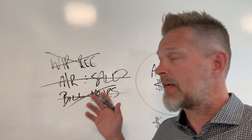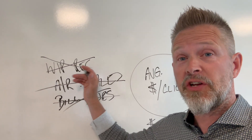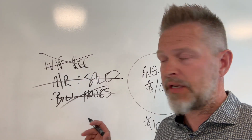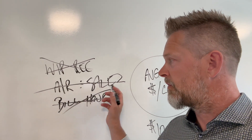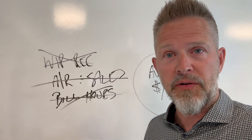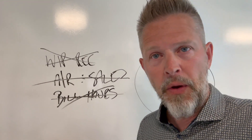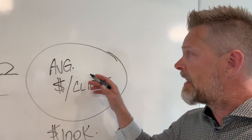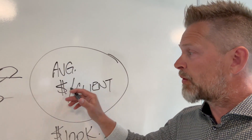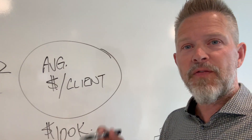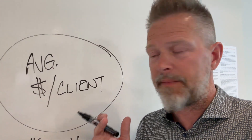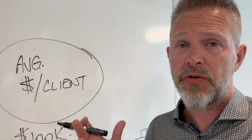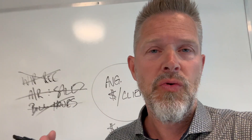Is it your recovery on your WIP? No. Is it your accounts receivable? No. Is it how many billable hours? No. The only thing that really matters is: what are you getting for the average price per client? If you can increase your average price per client — which is what we show you how to do in the Accountant Success Formula — you can make so much more money, work less, and have clients who actually appreciate you.